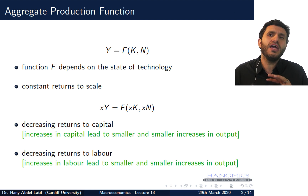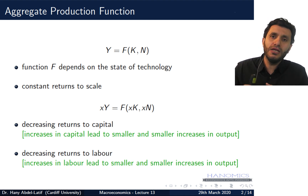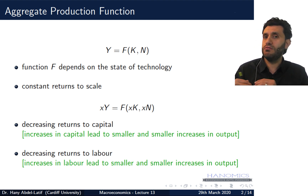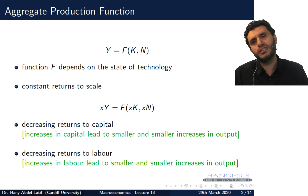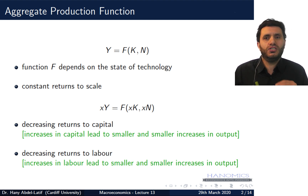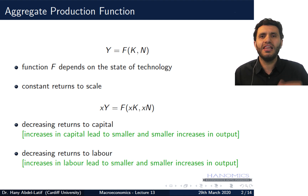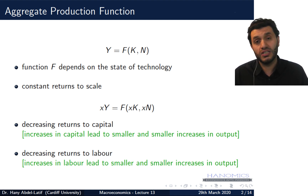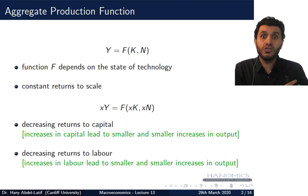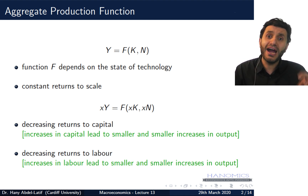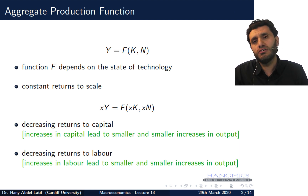If we assume constant returns to scale, meaning if you double your inputs — doubling both capital and labor — then output doubles as well. However, if you have decreasing returns to capital, that means if you double the amount of capital, your output increases by less than double. Similarly, decreasing returns to labor means if you double the amount of labor — say from four workers to eight — output changes by less than double.